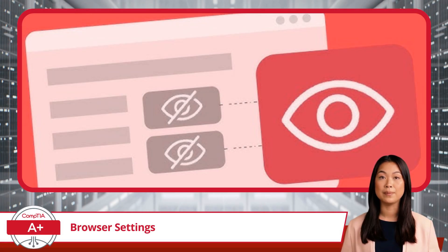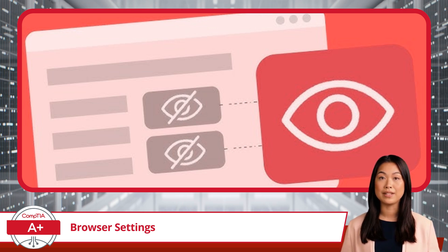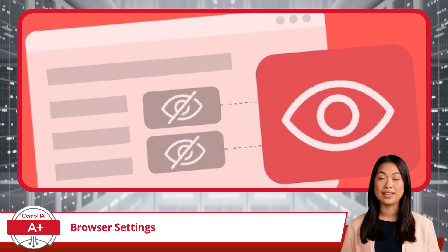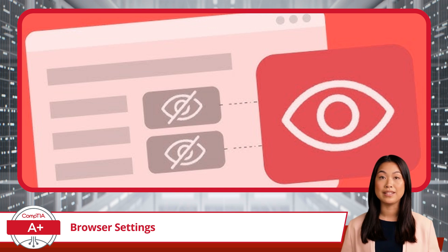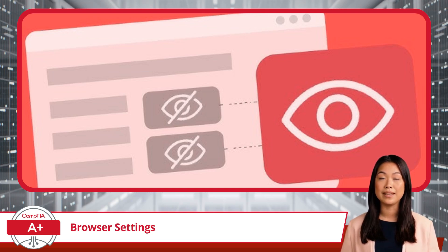Building on the idea of blocking unwanted content, we have ad blockers. Unlike pop-up blockers that target separate windows, ad blockers focus on removing ads embedded directly into web pages. Ads can be a nuisance, but they can also slow down browsing speeds or carry malware. By filtering out ad content, ad blockers enhance both performance and security. Just be aware that some websites may restrict access if they detect ad blocking software. Adjusting your ad blocker settings to allow ads on trusted sites can support their content without compromising your safety.